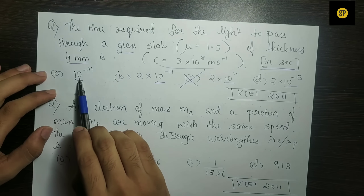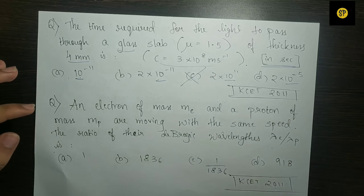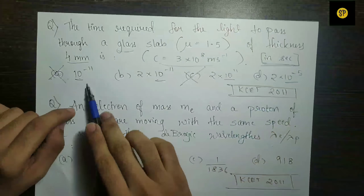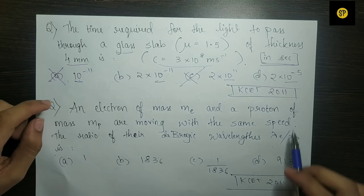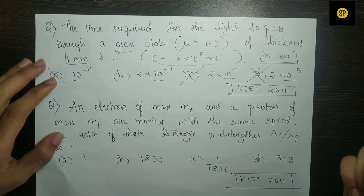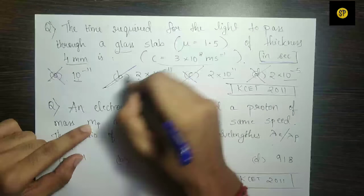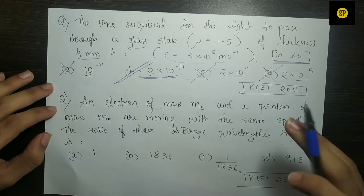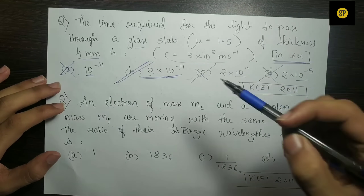Looking at the remaining options: 1 into 10 to the power minus 11, and 2 into 10 to the power minus 11. The final answer is 2 into 10 to the power minus 11. If you mark that, your answer is correct.